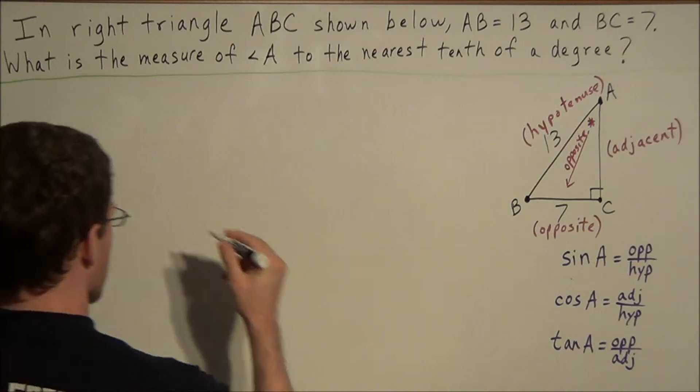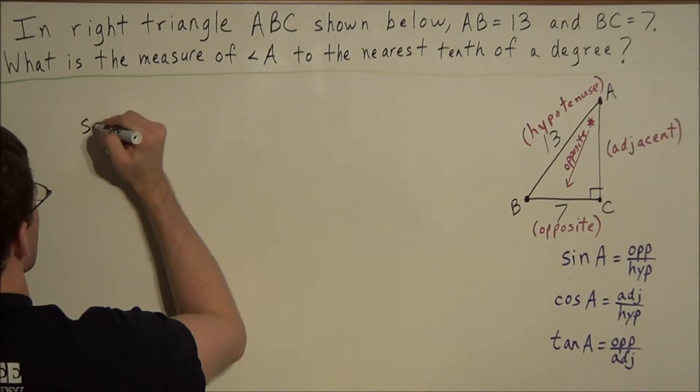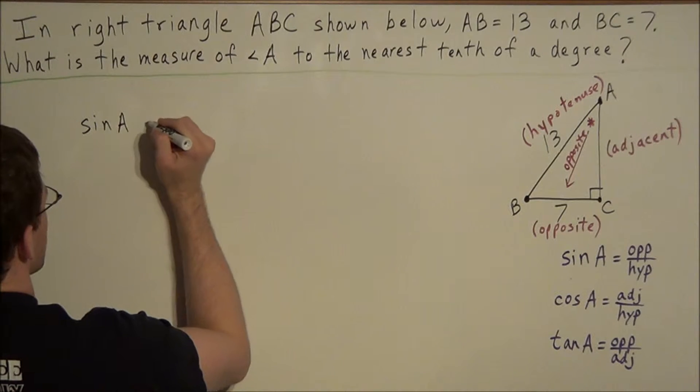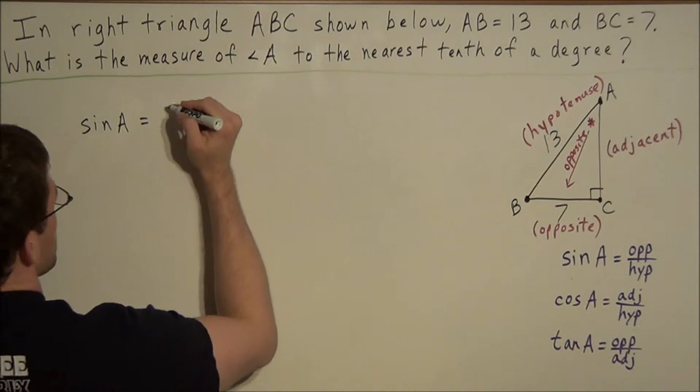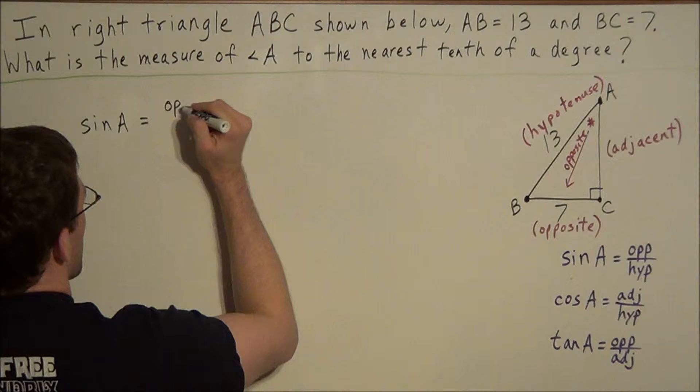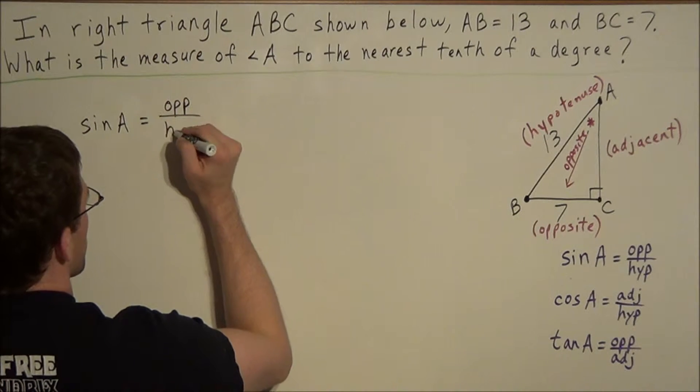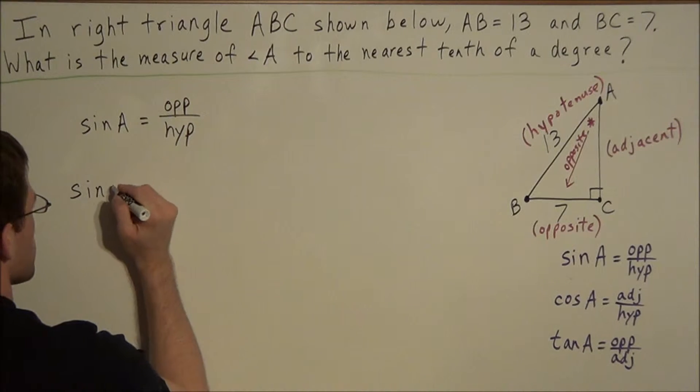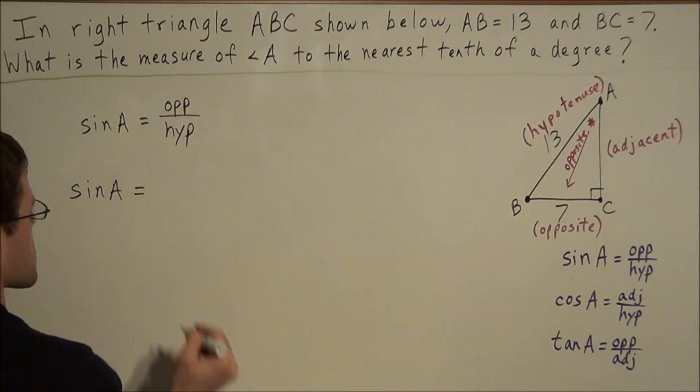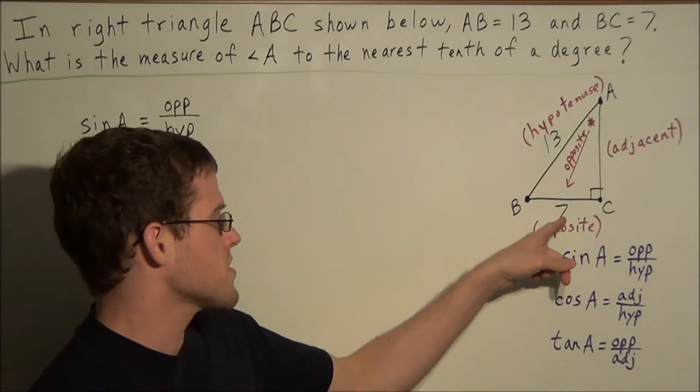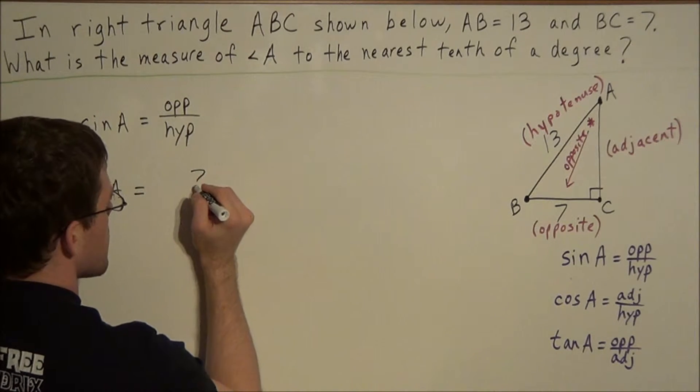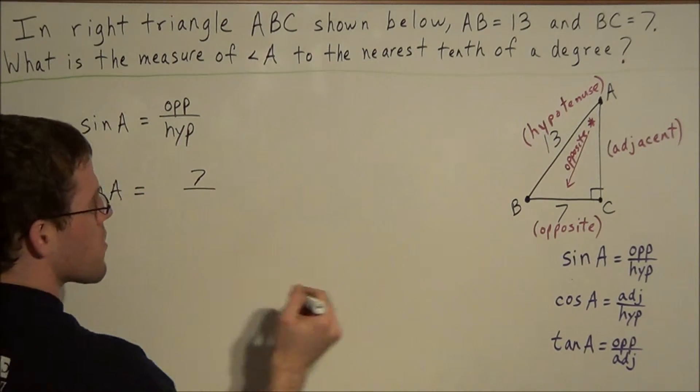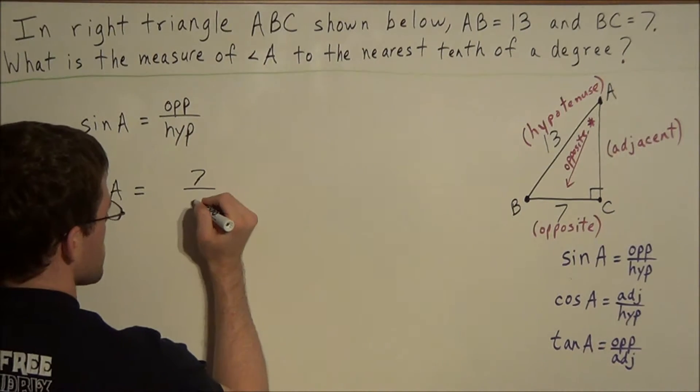So that allows us to set up, in general we have the sine of some angle, in this case A, is equal to the ratio of the side opposite over the hypotenuse. So now for the next step, all we need to do is we're going to substitute. We know that the opposite side has a length of 7, and we know that the hypotenuse has a length of 13.